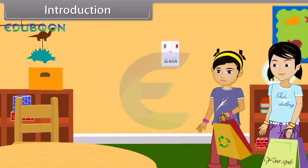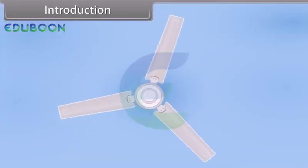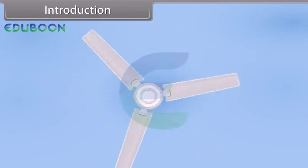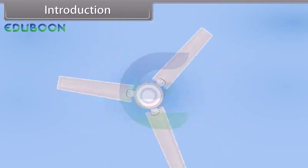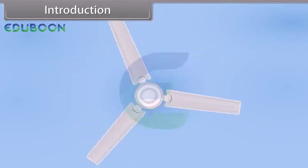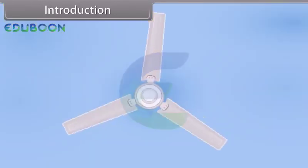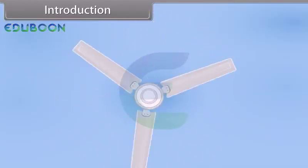Today, Aarti and Rajna went to the market and then returned home. Aarti switched on the fan and the bulb. The fan was running at low speed, so Aarti rotated the regulator of the fan to its high speed.